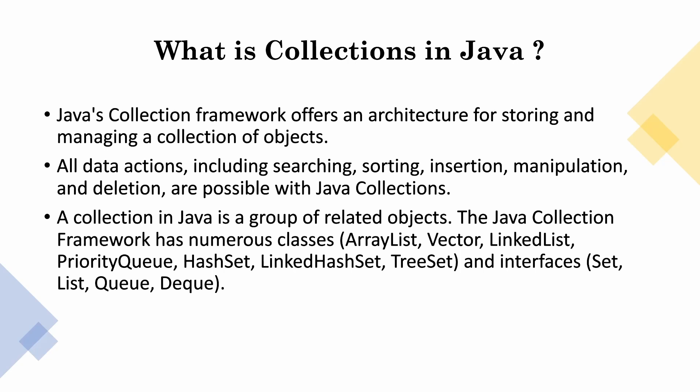A collection in Java is a group of related objects. The Java collection framework has numerous classes: ArrayList, Vector, LinkedList, PriorityQueue, HashSet, LinkedHashSet, TreeSet — and interfaces: Set, List, Queue, and Deque. We will be studying each one in detail in the upcoming videos.